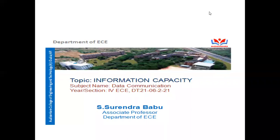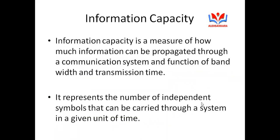Information capacity is a measure of how much information can be propagated through a given communication channel. That information is in the form of time and bandwidth, and it will be measured in terms of bits per second. The information capacity is a measure of how much information can be propagated through a communication system.